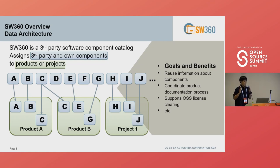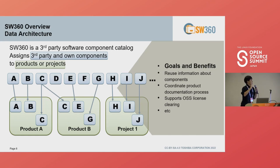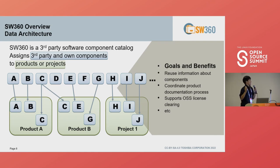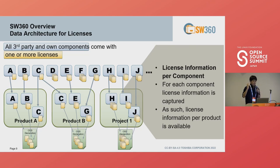SW360's data architecture works as follows: you save third-party software components and assign them to your product project. This architecture has strong points — for example, you can reuse information, coordinate product documentation processes, and support open source license clearing. Recently we also changed the data architecture so that license information is captured per component and also available per product.